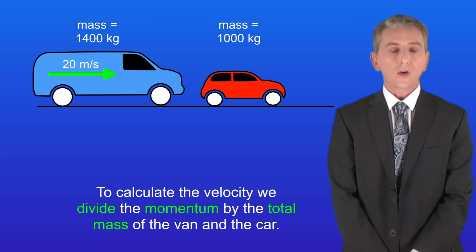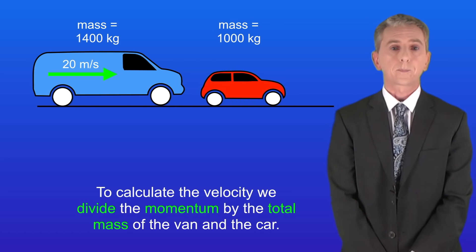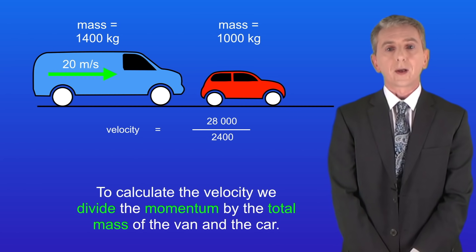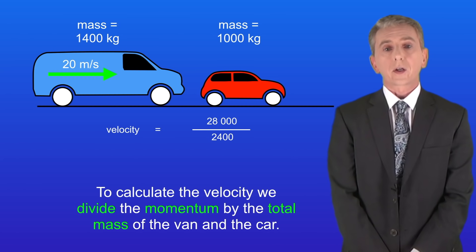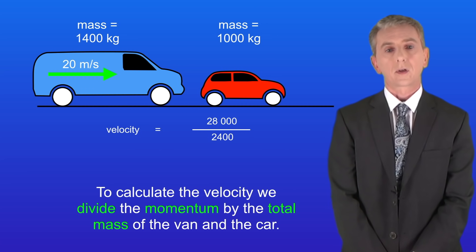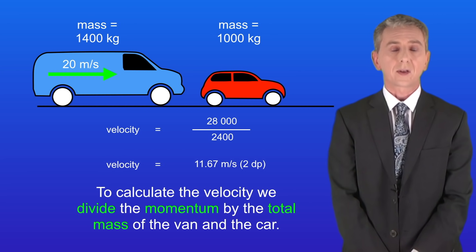To calculate the velocity we divide the momentum by the total mass of the van and the car. The momentum is 28,000 kilograms meters per second and the combined mass is 2400 kilograms. This gives us a velocity of 11.67 meters per second to two decimal places.